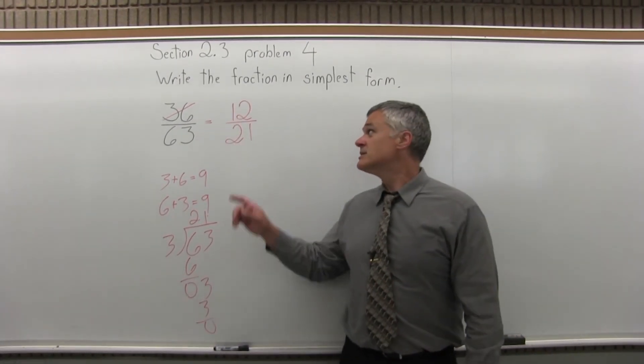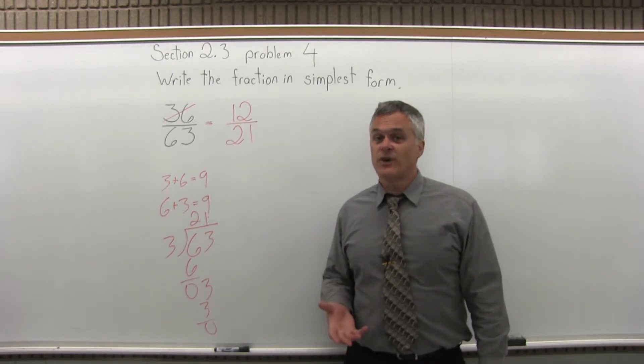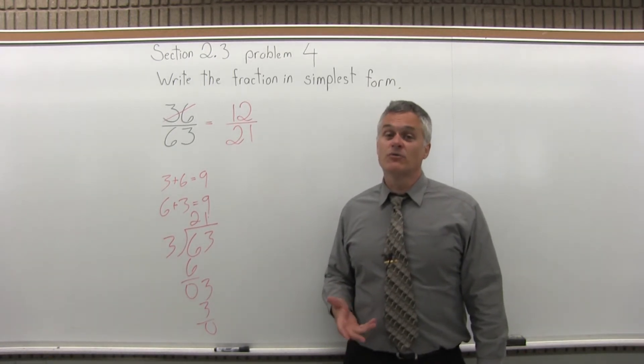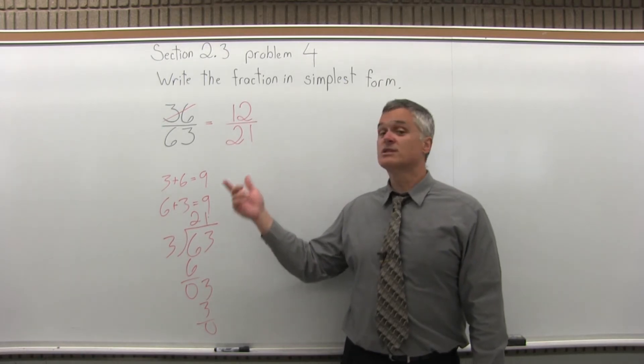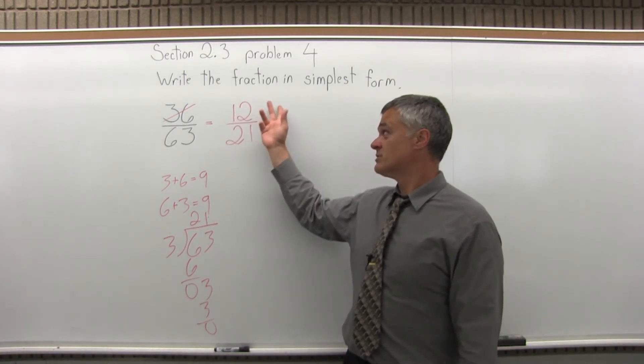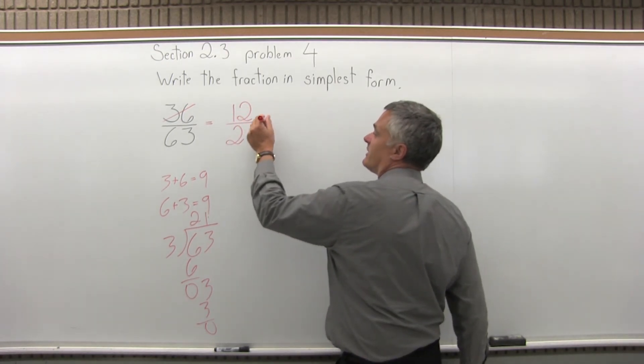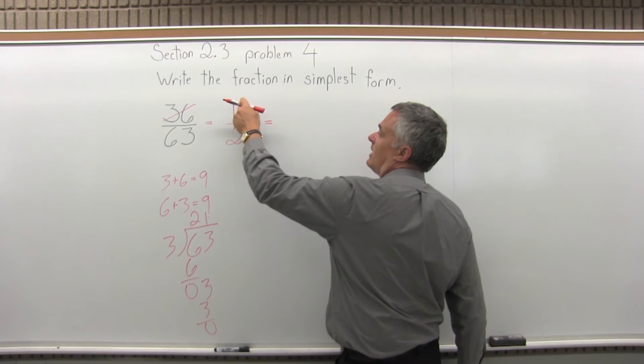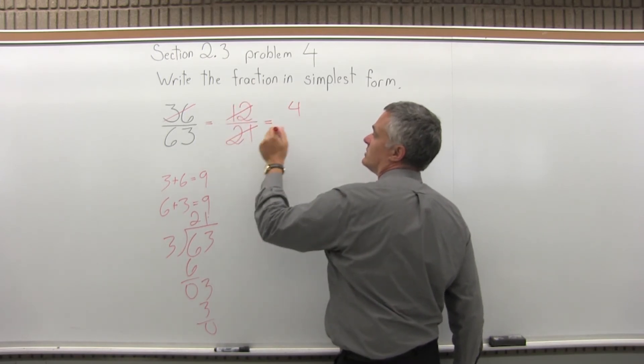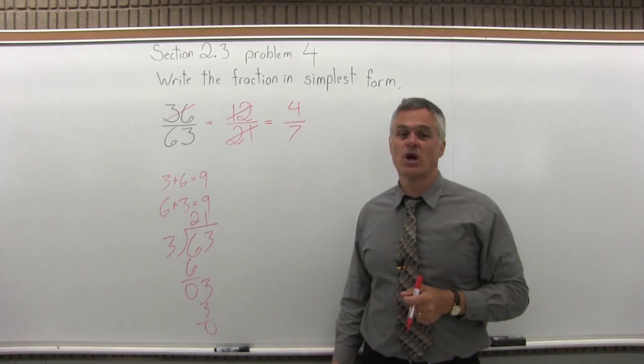So now, as I look at this, 12 over 21, is that as far as it goes, or can I reduce some more? I can reduce some more. 3 still goes into both of those evenly. And again, you can add the digits. 1 plus 2 is 3. 3 goes into 3. 3 will go into 12. These numbers are starting to get small enough, I can look at it and see. 3 goes into 12 four times. 3 goes into 21 seven times. And now 4 over 7 is as small as it will go.